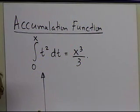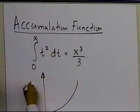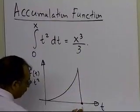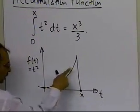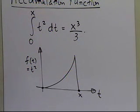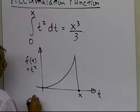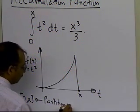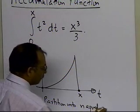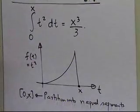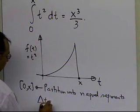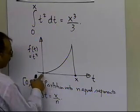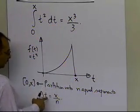Here's how it's going to work. We have the function f of t equal to t squared, and I want to find the area under the curve from 0 to x. I'm going to partition the interval [0, x] into n equal segments, which means delta t equals x divided by n — that's the length of the total interval divided by n.